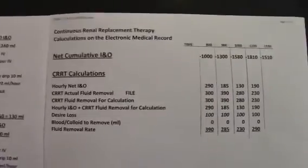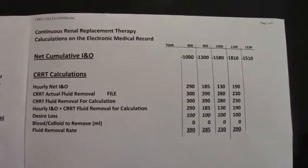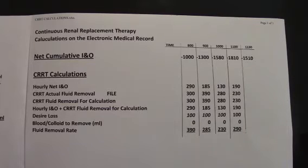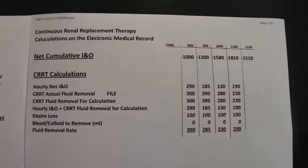The next line is CRRT active fluid removal. To retrieve this number, you will have to go to the history in the CRRT machine, the Prisma Flex. Under history, you will determine how much was removed the previous hour. I am stating that the previous hour the CRRT removed 300 ml. You place that in line number two.